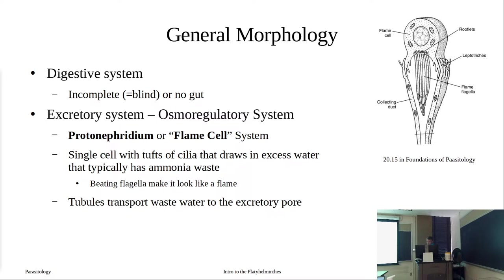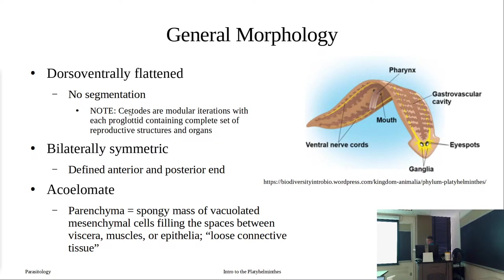We'll stop here. We're starting with the flatworms and will begin with the digenetic trematodes next time, so come prepared to look at those. I had an optional book called the Color Atlas of Parasitology — there are a couple copies in the lab — but since we're now in the lab with computers, I probably wouldn't recommend that book anymore, as you can easily look up parasites and find pictures and diagrams online. There is a word list posted, and that's what we'll use for our practicals and quizzes.